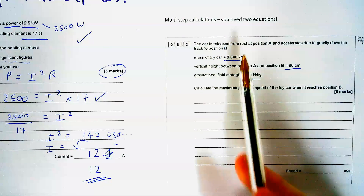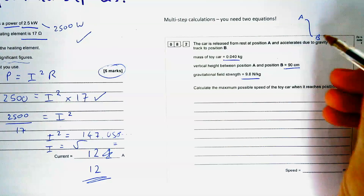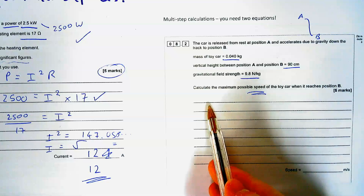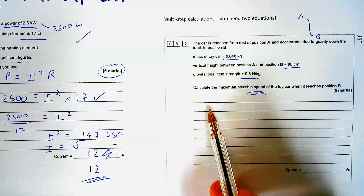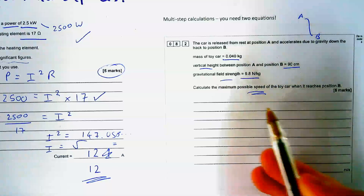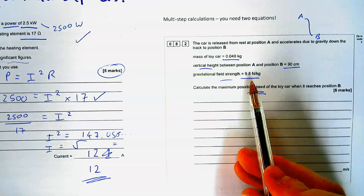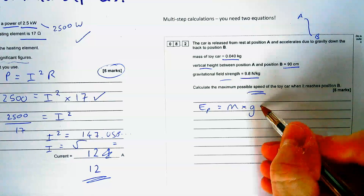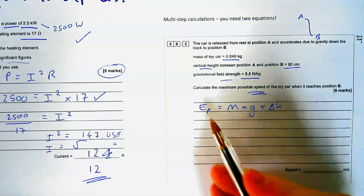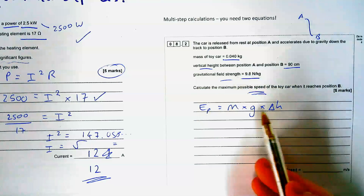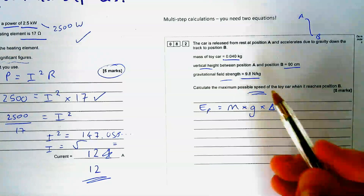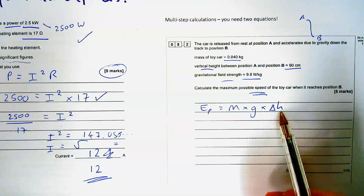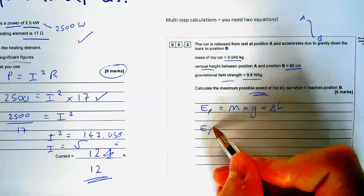The first question is a car being released from the top of a slope to the bottom — calculate the possible speed. Our first step is to think about what equations would be useful. I've got mass, height, and gravitational field strength. There are only two equations that have gravitational field strength and only one for paper one, so that's our first hint: we might have to use the gravitational potential energy equation. I've got everything I need — mass, gravitational field strength, and change in height — so let's dive in.